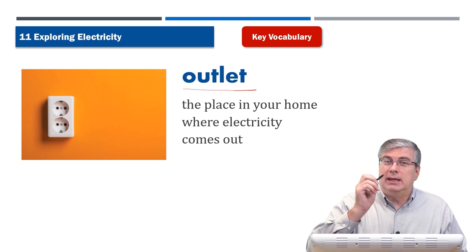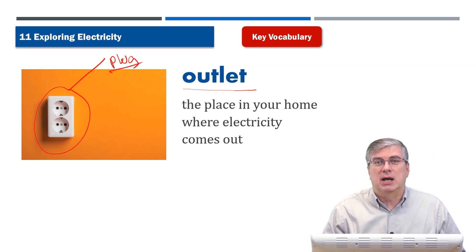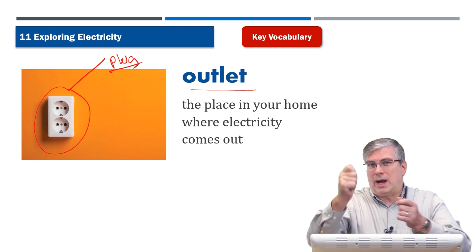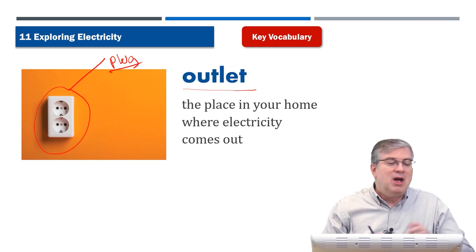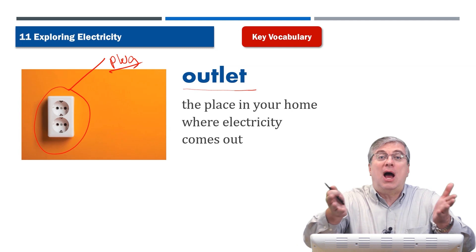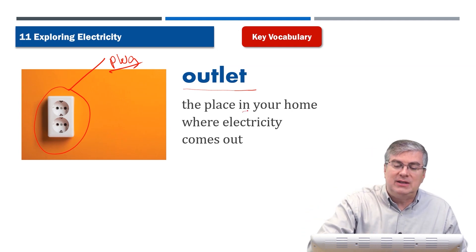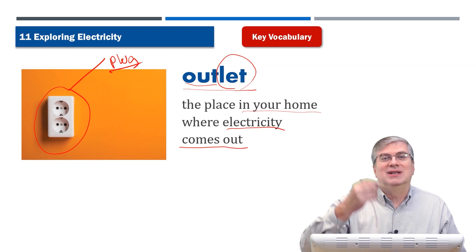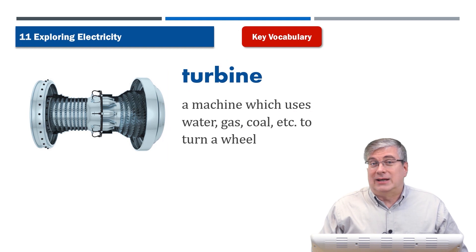Remember, the socket in the wall is also called a plug by some people — you plug a plug into a plug. But we also call it an 'outlet,' because it lets out electricity. It's the place in your home where electricity comes out — you let the electricity out, so it's an outlet.